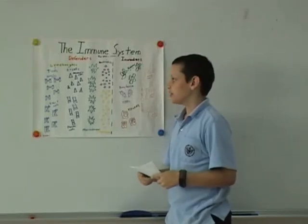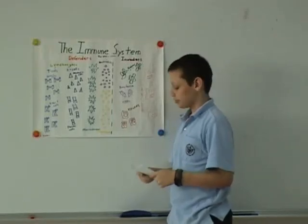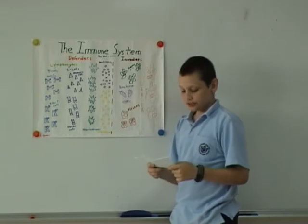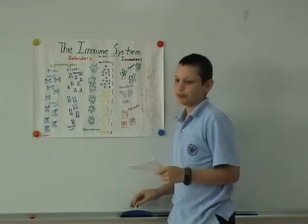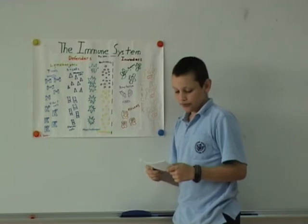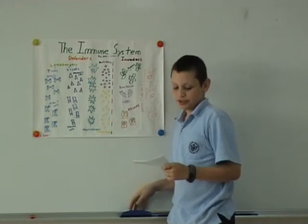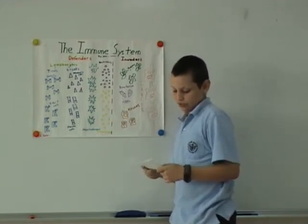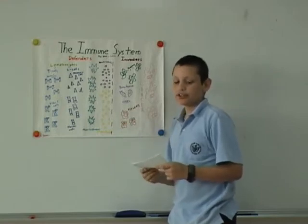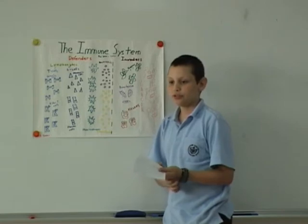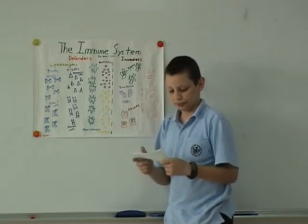Some common disorders of the immune system is AIDS. AIDS stands for acquired immunodeficiency syndrome. HIV viruses damage the immune system. Another one is arthritis. Arthritis is when your immune system eats away the tissue, causing joint pain.